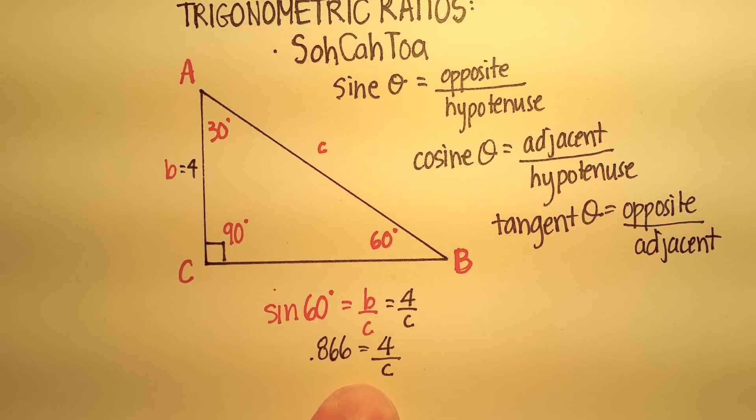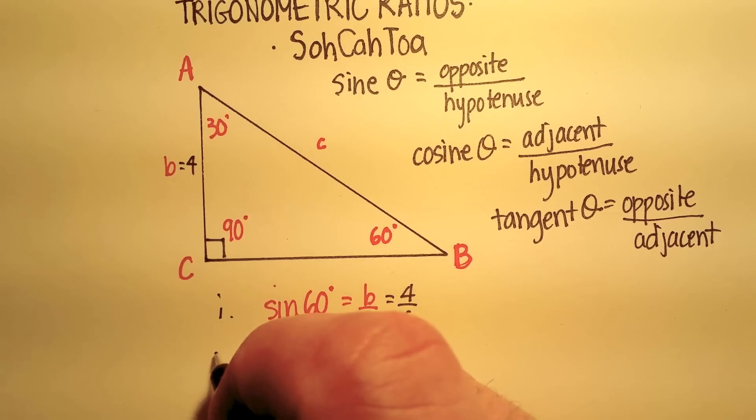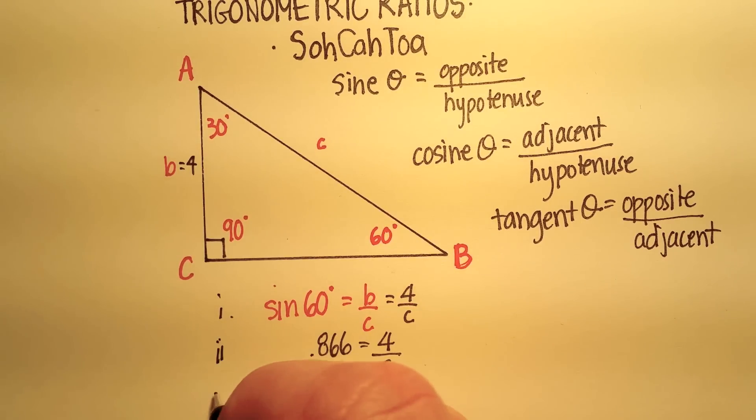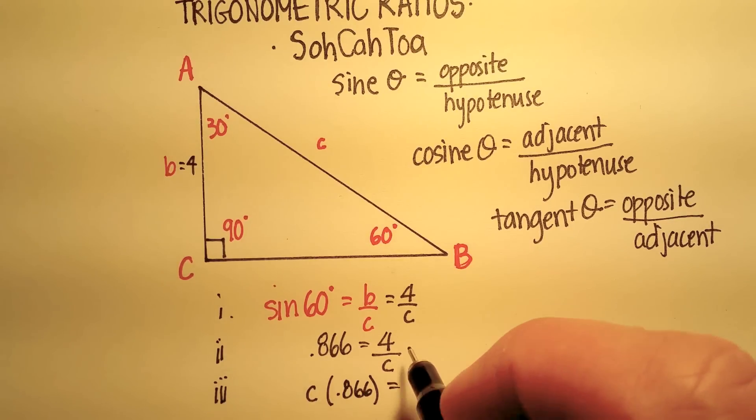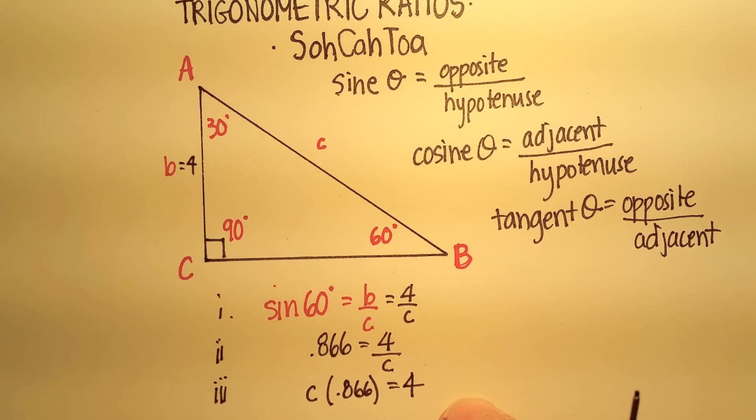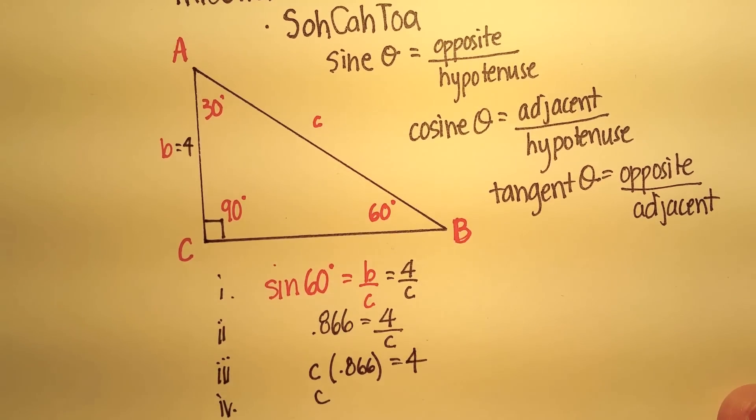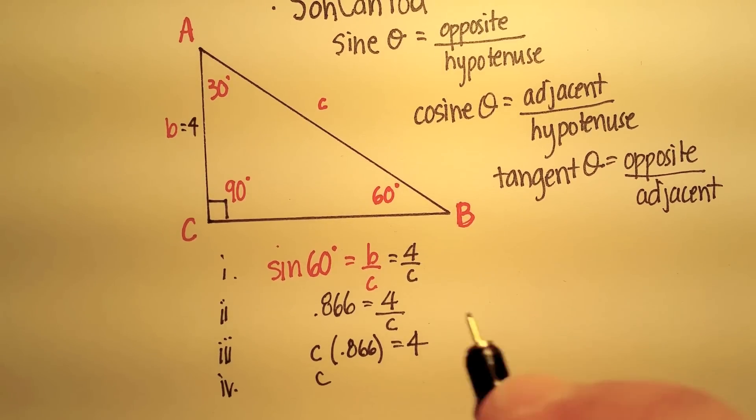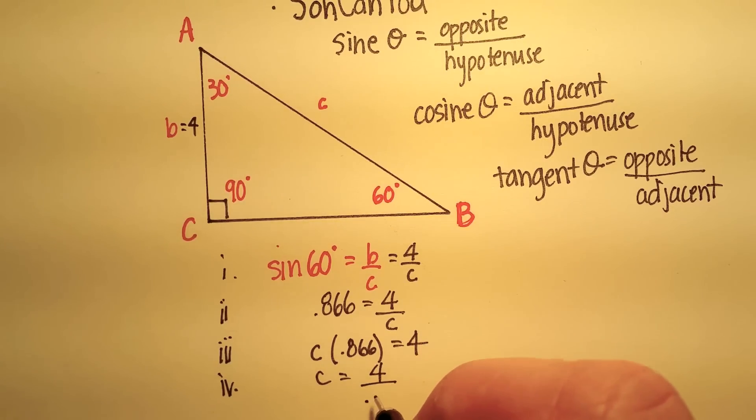Now you just use your algebra and solve for c. So that'll be my step 1, step 2, step 3 is we'll just multiply both sides by c, and you get c times 0.866 equals 4. Let's divide now by 0.866, so you get c is equal to 4 divided by 0.866.